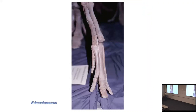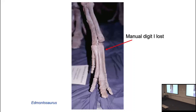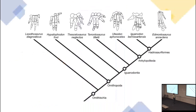Hadrosaurs also have very long slender metacarpals, and something is missing — they've lost their thumbs entirely. Whatever that spike thumb was used for, hadrosaurs don't have it anymore. They still have an opposable pinky, elongate metacarpals two through four, and hoof-like unguals, representing the general pattern of transition from early ornithischians and early ornithopods all the way up to a duckbill.